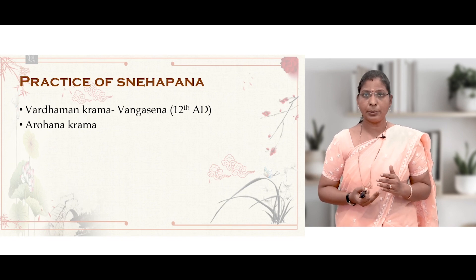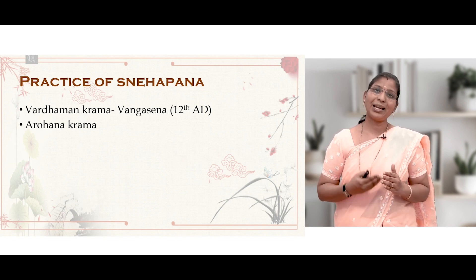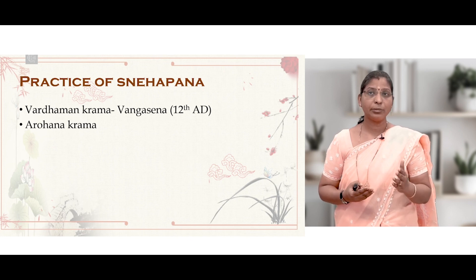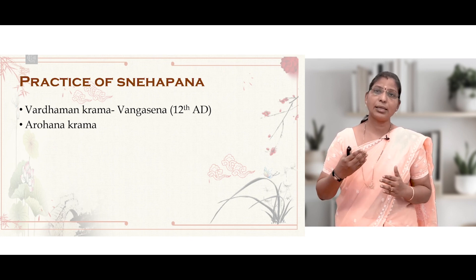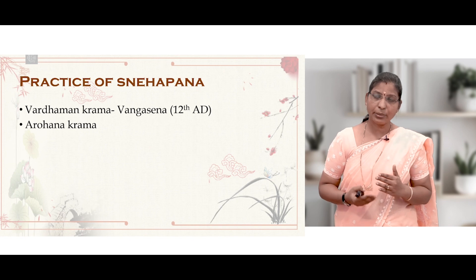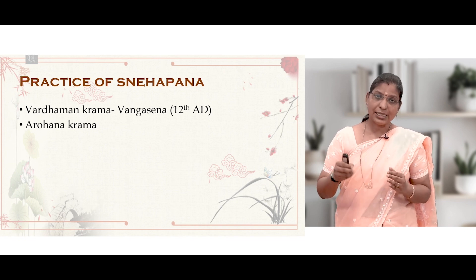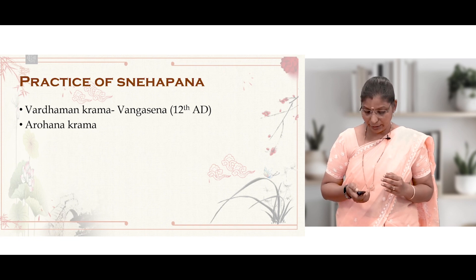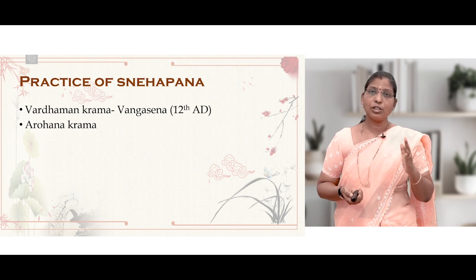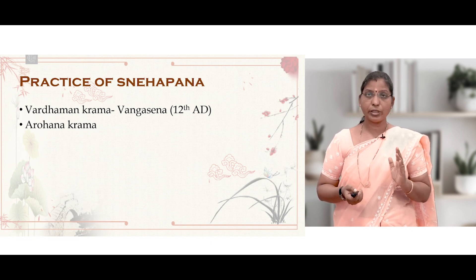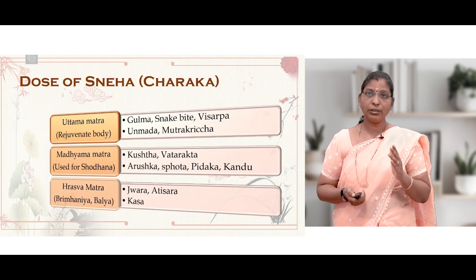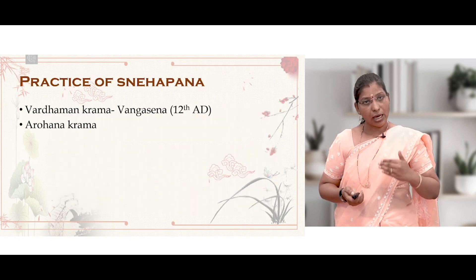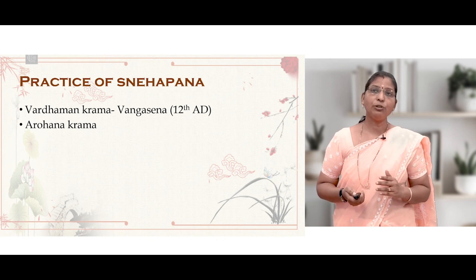In current Panchakarma practice, the Vardhamana Krama (or Aarohana Krama) is followed, classically described in Vanga Sena (12th century). In the original texts of Charaka, Sushruta, and Vagbhata, only the main Matra — Uttam Matra, Madhyam Matra, and Raswa Matra — are given. The Aarohana Krama of incrementally increasing dose is described by Vanga Sena.